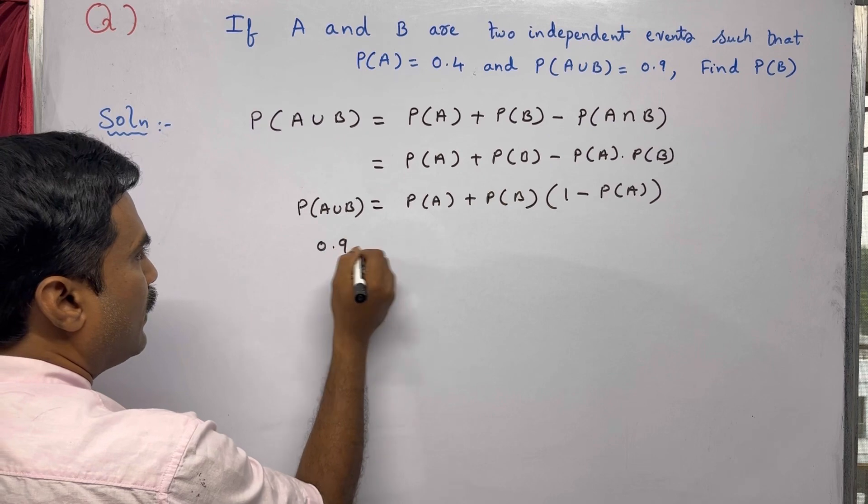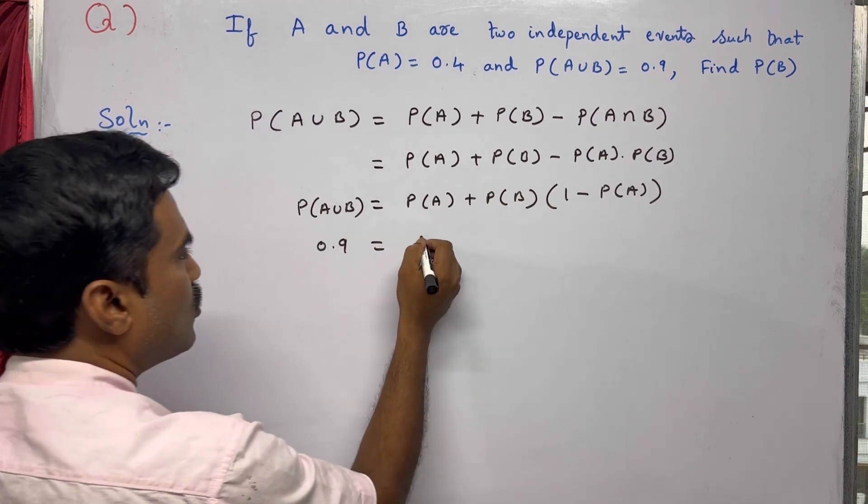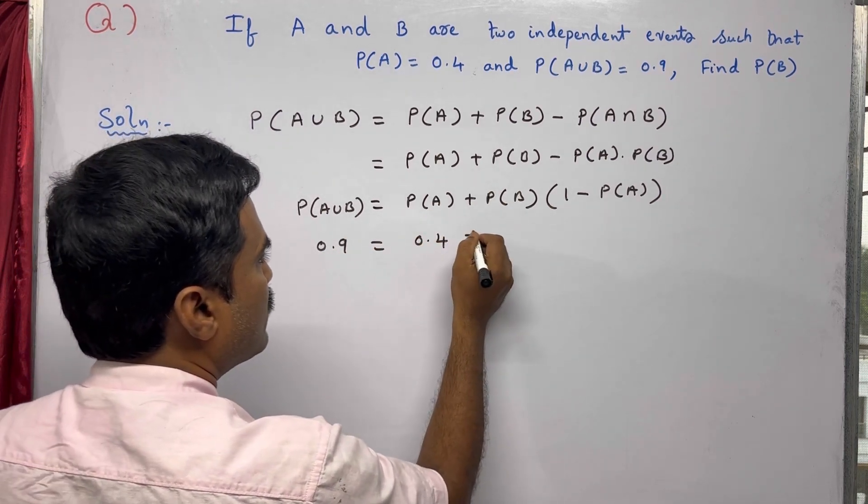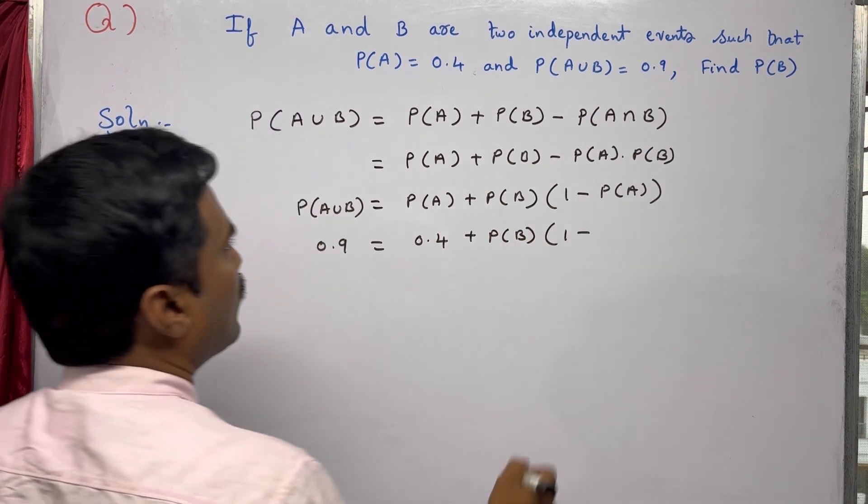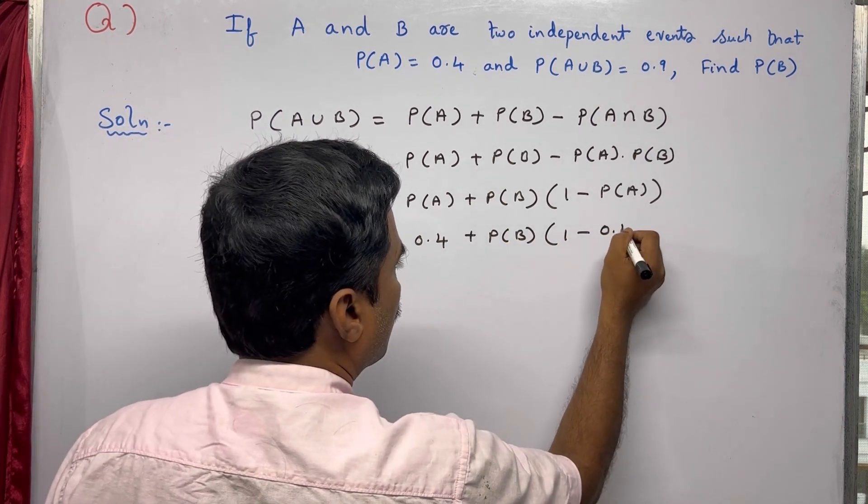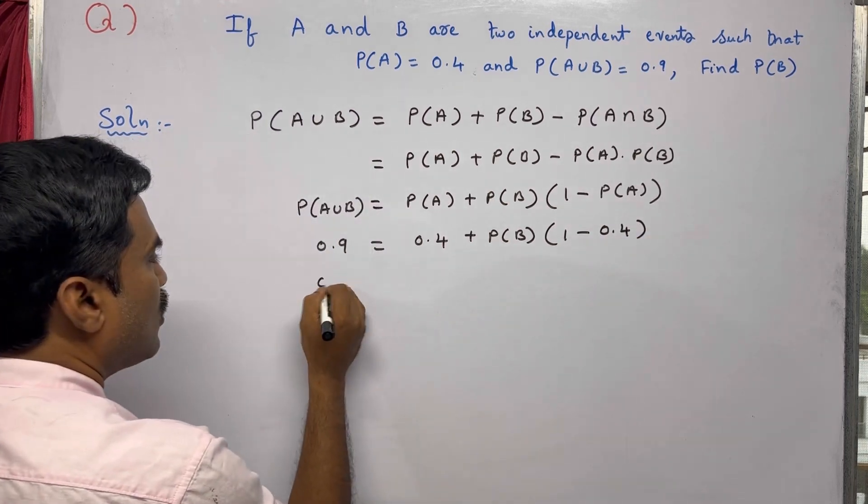So 0.9 equals, now what is P(A)? That is 0.4 plus P(B), which you need to find. So 1 minus P(A), that value is 0.4.